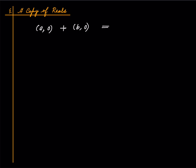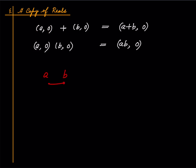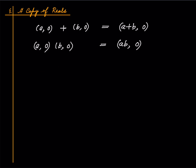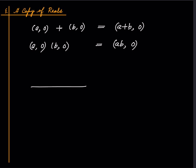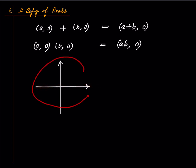Now let us make an observation. (a comma 0) plus (b comma 0) equals (a plus b comma 0), and (a comma 0) times (b comma 0) equals (ab comma 0). The addition and multiplication are both happening exactly like in real numbers, just with this extra decoration. So there is a copy of real numbers sitting inside complex numbers that preserves the arithmetic of real numbers, and that copy is nothing but the x-axis. Complex numbers extend real numbers — that is the key point.